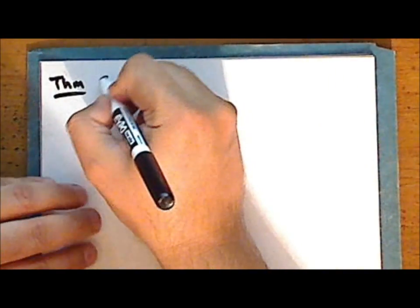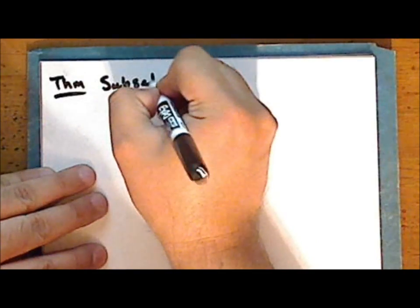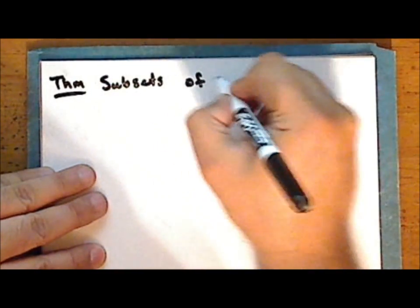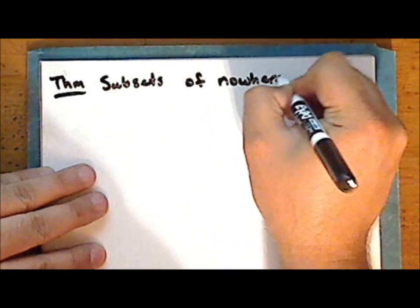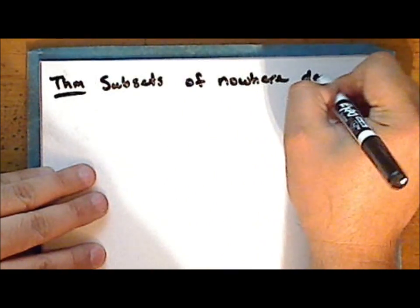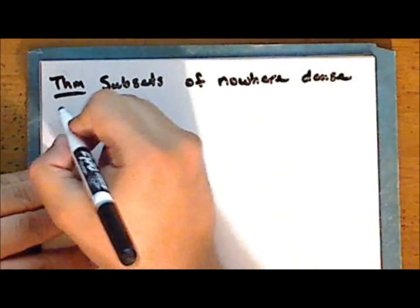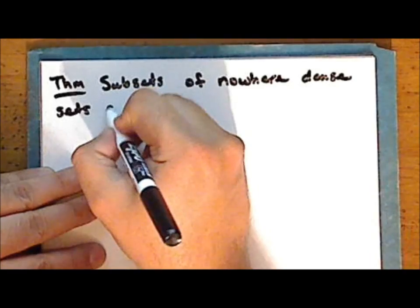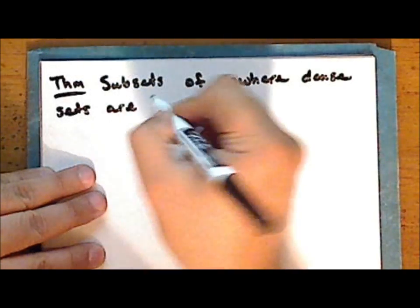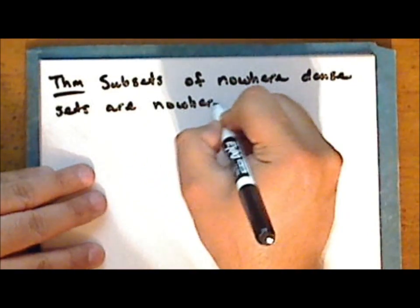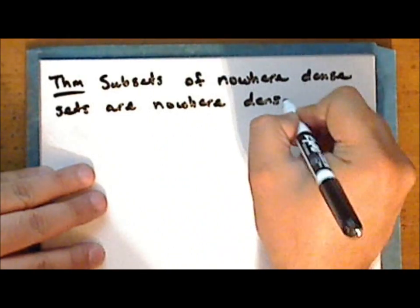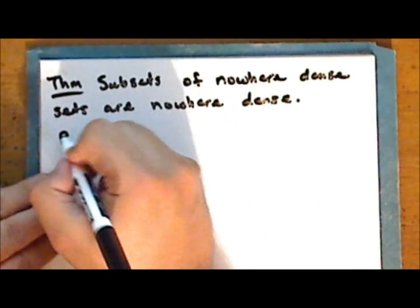Next we will prove that subsets of nowhere dense sets are also nowhere dense.